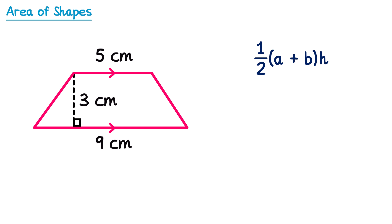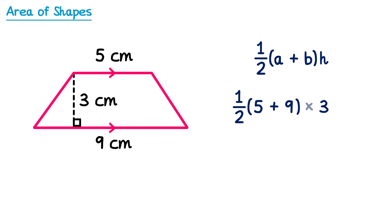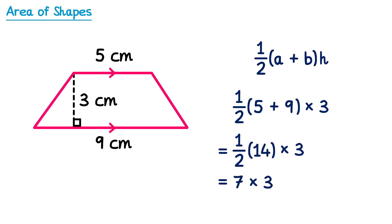Let's have a look at how we can use this formula in an example. The first thing to do is work out the values of A, B, and H. A and B are the parallel sides, so we could say that 5 was A and the 9 on the bottom was B — it doesn't actually matter which way round you put these. And then the height H would be 3. We then copy out the formula and replace the letters A, B, and H with the numbers in the question. So we have one half, then a bracket, inside which we add A and B together — so we add 5 and 9 — and then we multiply this by H, which is 3. To work it out: one half, then 5 plus 9 which is 14, and then multiply by 3. Half of 14 is 7, and 7 multiplied by 3 is 21. So the area of this trapezium is 21cm squared.